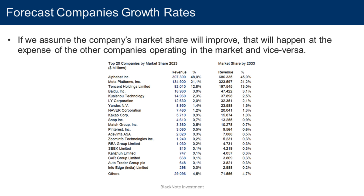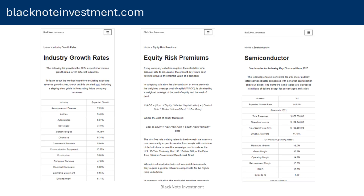That concludes my excursus on how to calculate revenue growth rate in a company's valuation. While there is no guarantee that this approach will yield the exact same revenue growth rate a company will eventually achieve, it allows investors to come up with a reasonable and plausible expected revenue growth rate which takes into account the industry's dynamics rather than treating the firm as a standalone actor. If you are interested in trying this approach, you can find the expected growth rate for each of the 37 industries on my website Blacknote Investment, which also offers equity risk premiums for 39 different countries, expected earnings growth rates, and detailed industry and sector reports containing data like total revenues, free cash flows, median operating margins, return on capital, beta, and financial ratios.